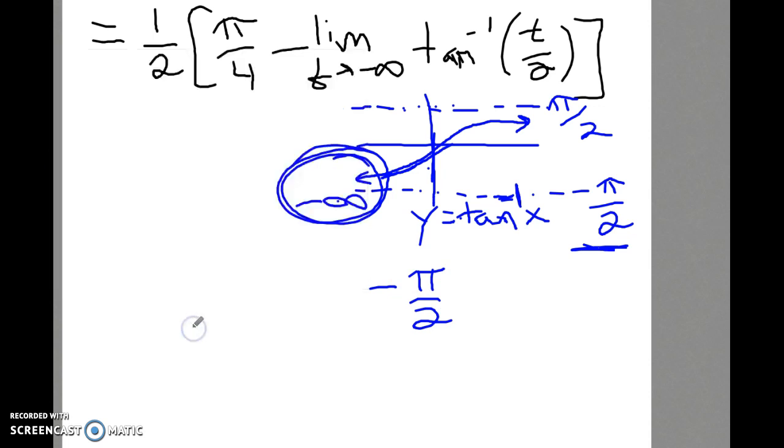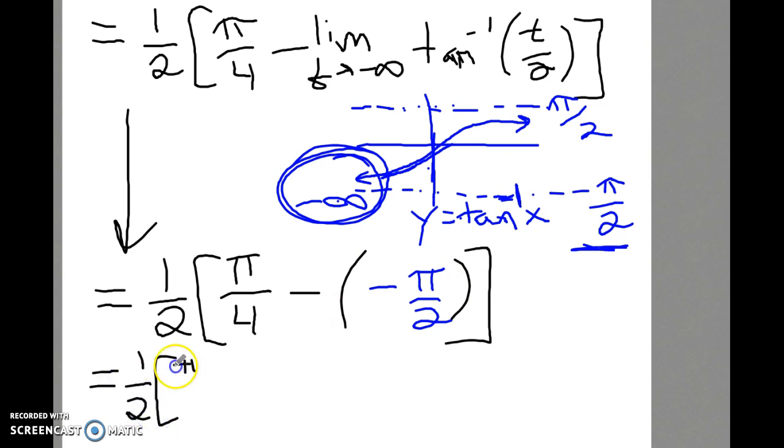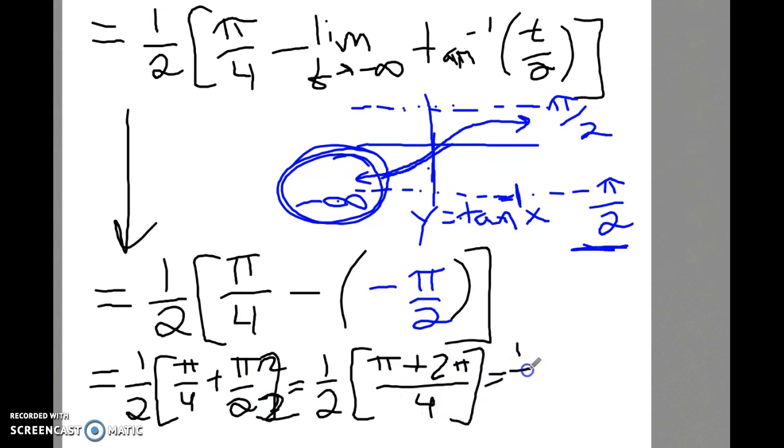So now we just have to crunch the numbers. This is 1 half times pi over 4 plus pi over 2. If you get a common denominator inside the brackets, that's pi over 4 plus 2 pi over 4. You combine it, and that's 3 pi over 4. Multiply straight across, and this is 3 pi over 8.